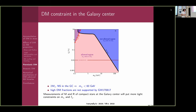This constraint was derived for fermionic dark matter. By changing the dark matter model, by changing the baryonic equation of state, or by improving our understanding of the accumulated dark matter fraction, the constraint will shift. Further studies are also necessary.